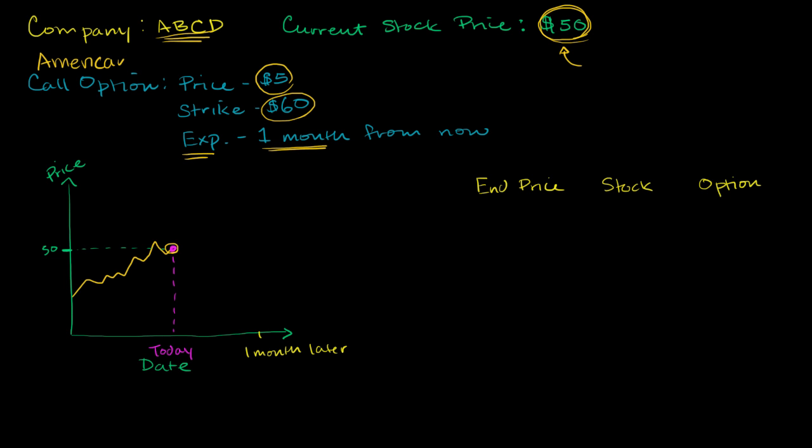And it can be compared to a European option. An American option allows you to exercise the option, to actually buy the stock any time from the time you have the option until the expiration. On a European option, you only have the option. You can only exercise it on the expiration. But we'll just focus on the American.